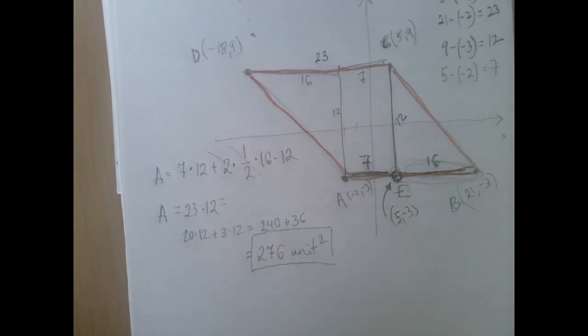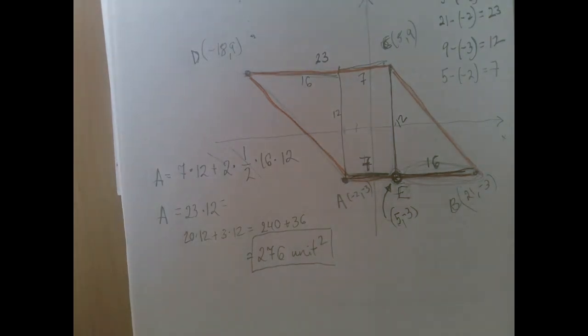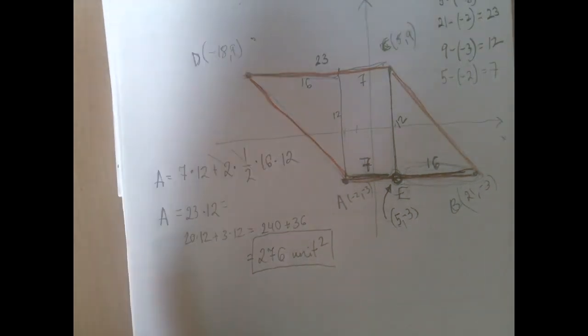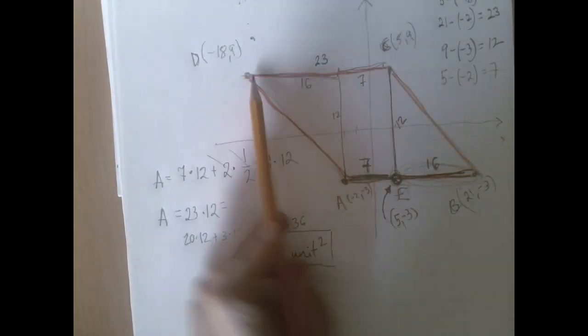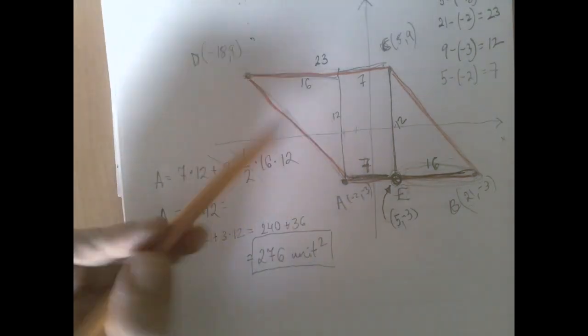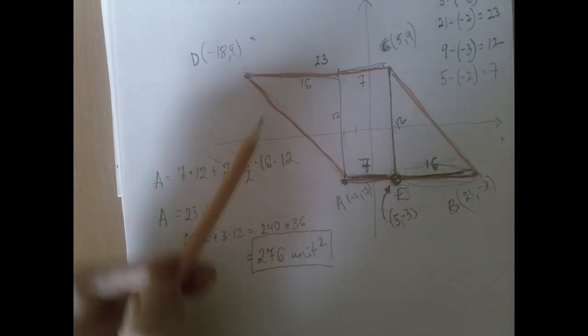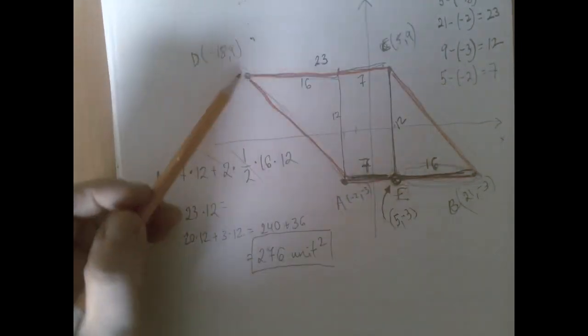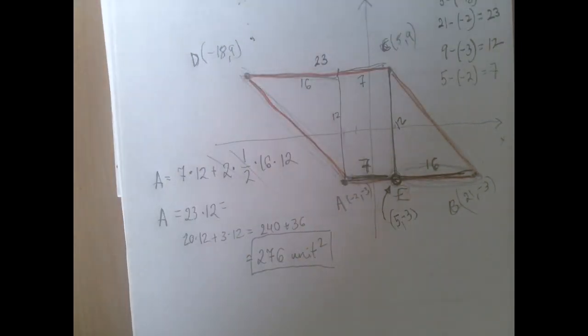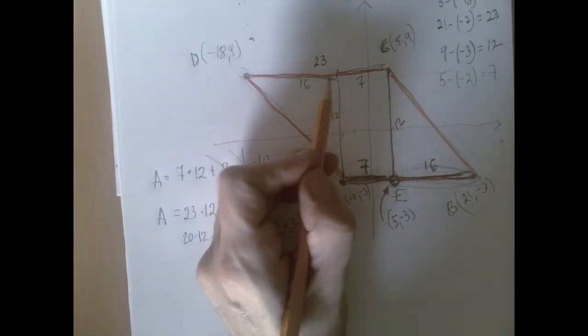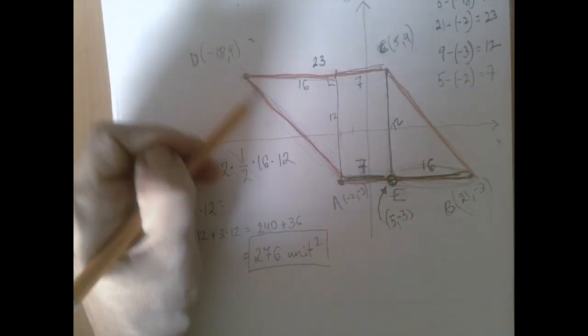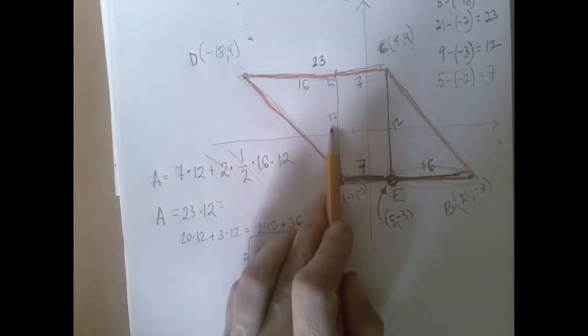Now usually the perimeter is the easier one, and we usually start with that. But if you notice for the perimeter, we just need two side lengths. The 23 that we have, but we don't have this other one. So the perimeter is going to be twice 23 plus twice the same length, which we don't know yet. But we can figure it out because it's the hypotenuse of a right triangle with sides 16 and 12, right?